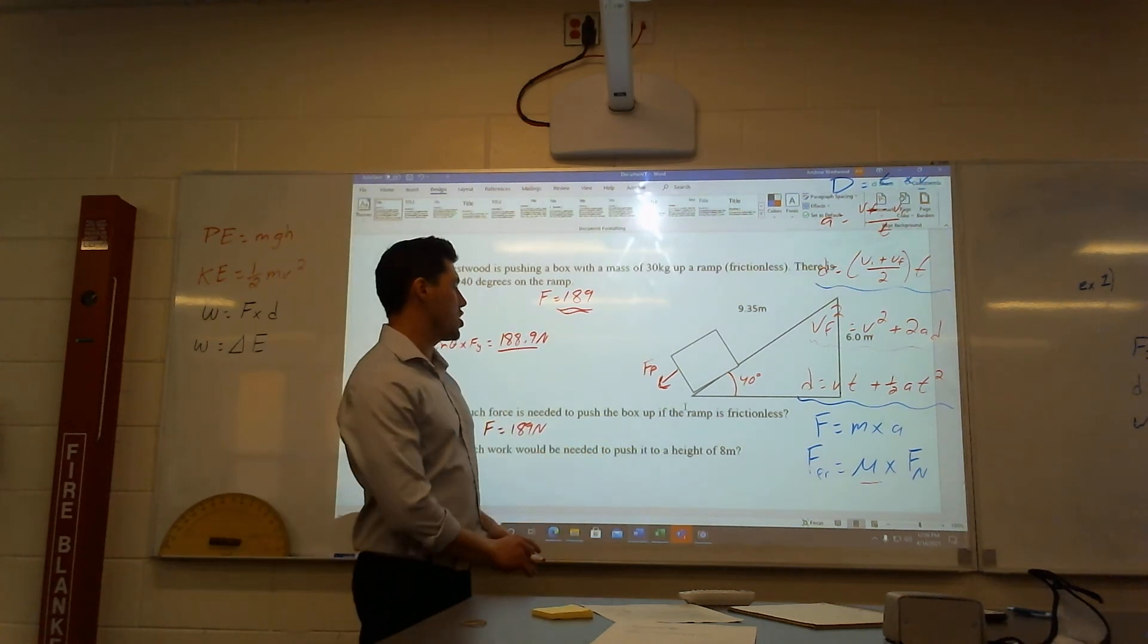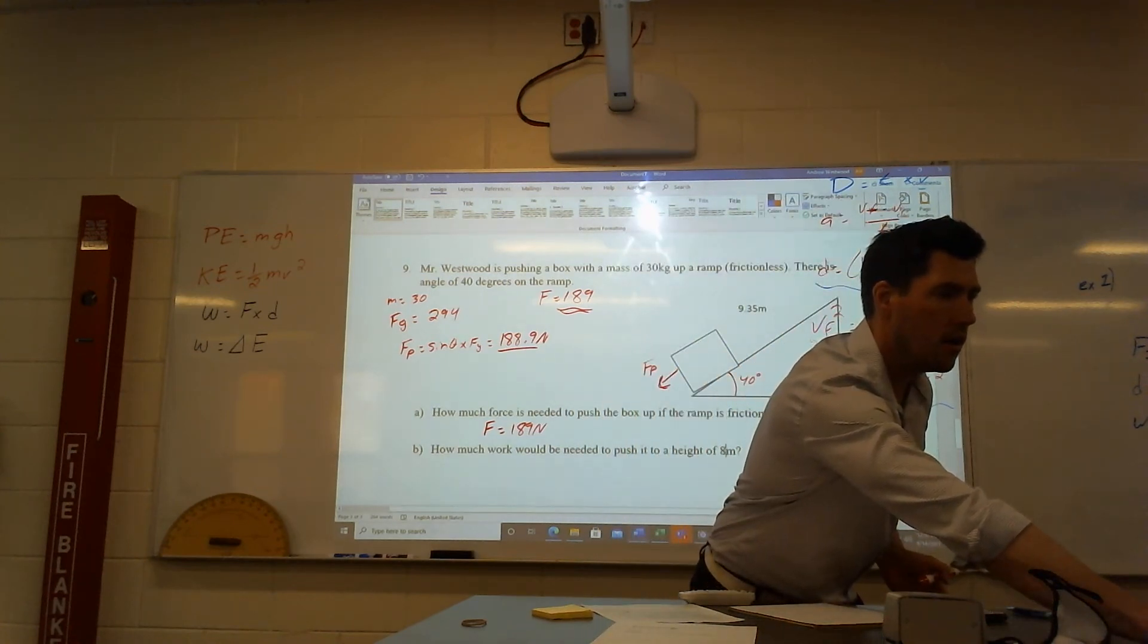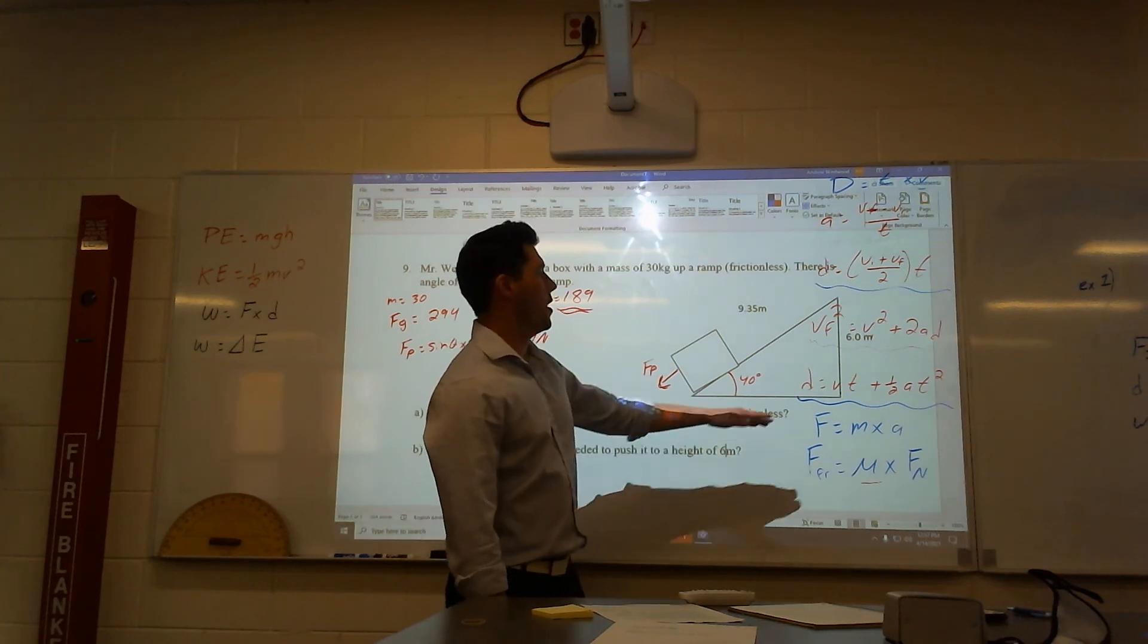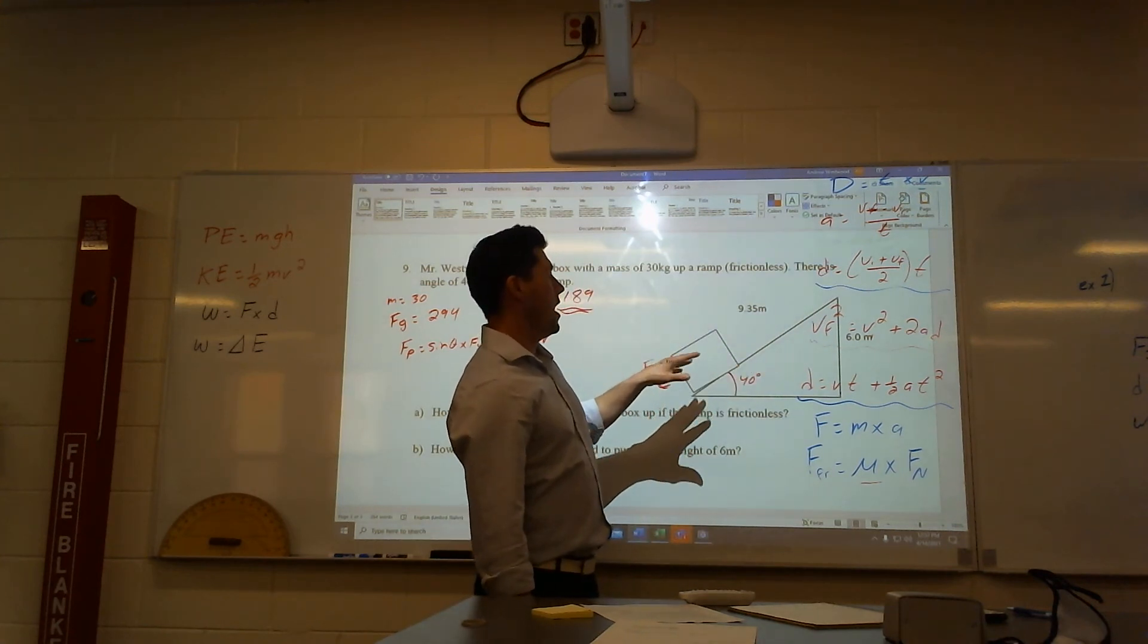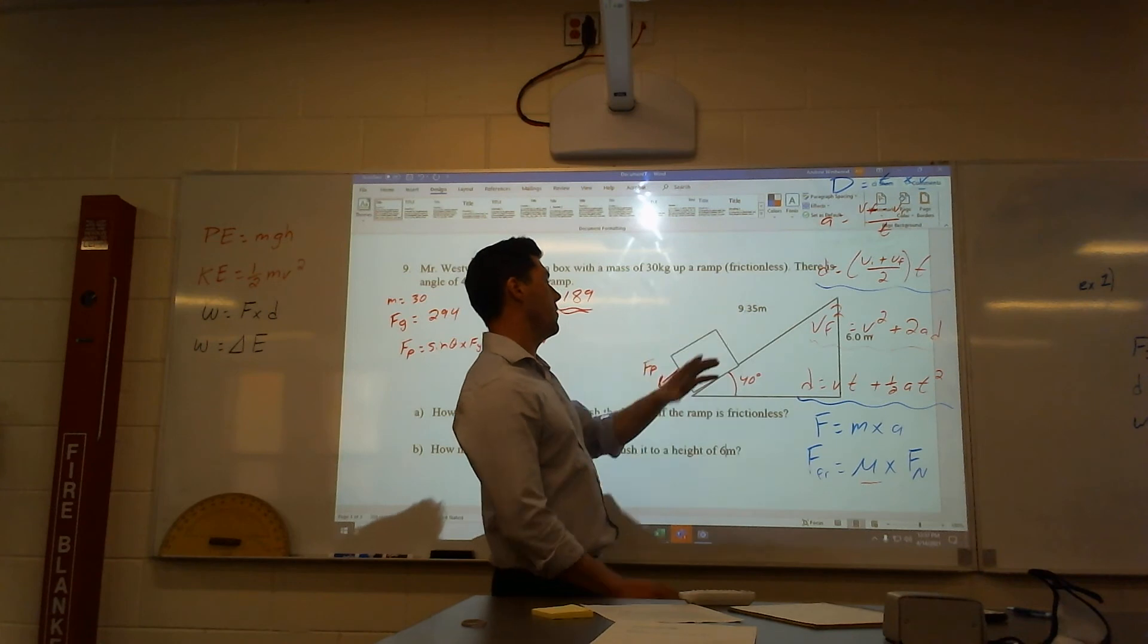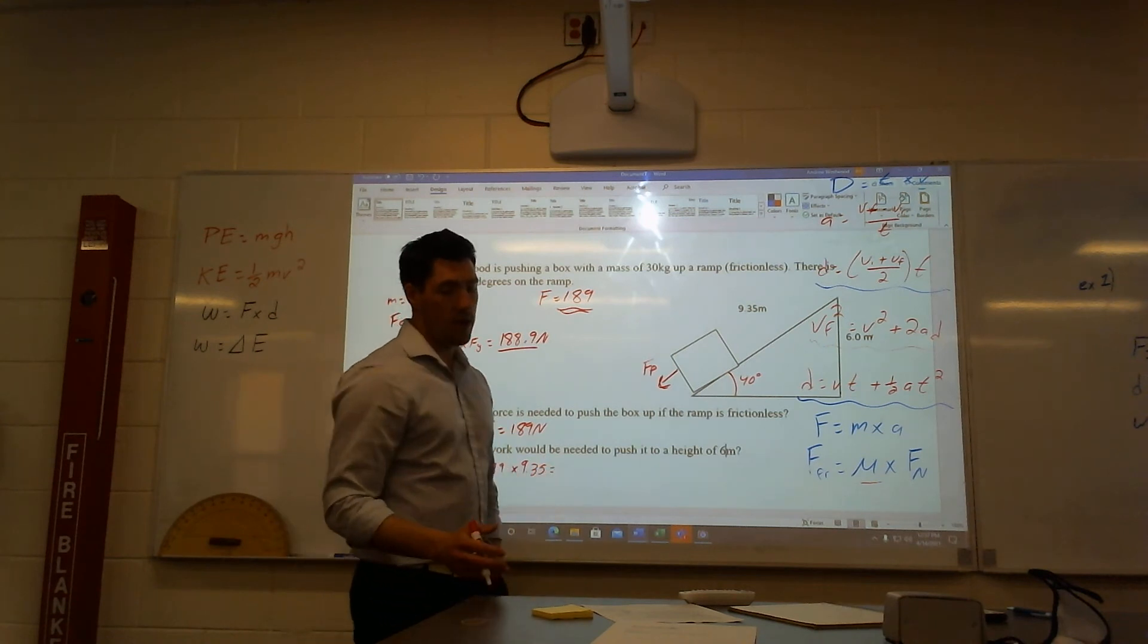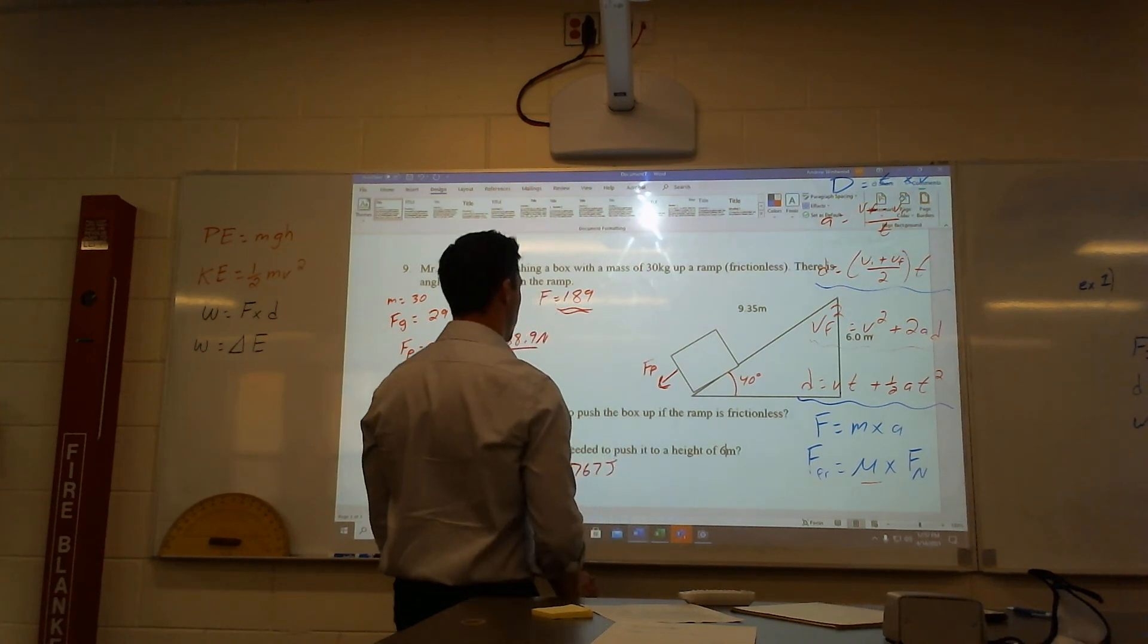It says how much work would be needed to push it up to a height of 6 meters? Let me change this to 6 meters real quickly. A little typo. How much work would be needed to push it up to a height of 6 meters? If I wanted to go to a height of 6 meters, I need to know how long this ramp is. I'm just going to take my force and multiply it by the distance. It's going to get to 6 meters height-wise, but I need to push up this ramp that's 9.35 meters. So my work here equals 189, the force, multiplied by 9.35. When I do that, I get 1,767 joules. That's how much energy it took.